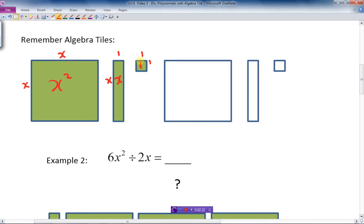Next to it, we've had the same shapes, but there's no color in them. And so this is negative x squared, negative x, and negative 1. That's just a reminder of what we did previously, some lessons ago.